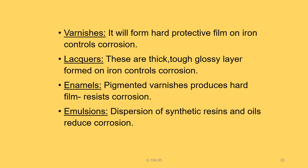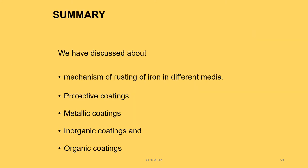Varnishes form a hard protective film on iron and control corrosion. Lacquers are thick, tough, glossy layers formed on iron that also control corrosion. Enamels are pigmented varnishes that produce a hard film. Emulsions are dispersions of synthetic resins and oils that reduce corrosion.